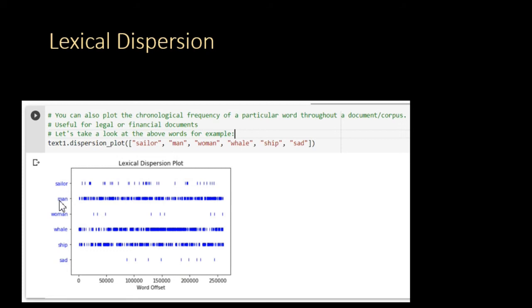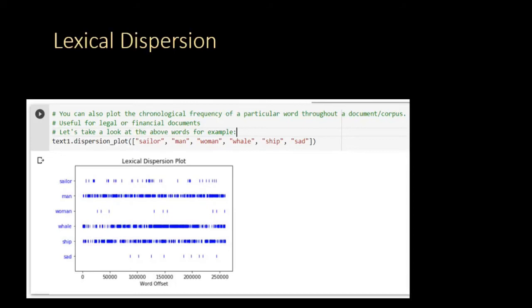You can see that the word man is far more frequent than the word sailor. You can see that the word man is also far more frequent than the word woman. It's interesting. Lexical dispersion plots are super important for chronologically analyzing documents, especially formal documents, especially financial and legal documents.